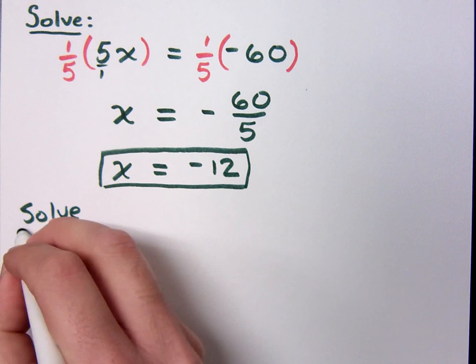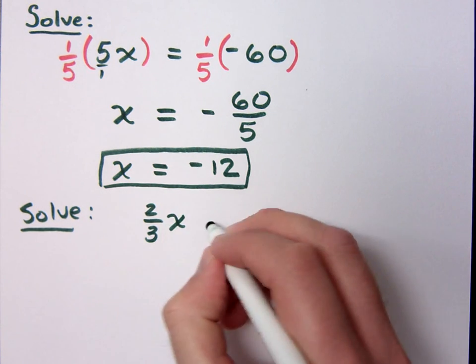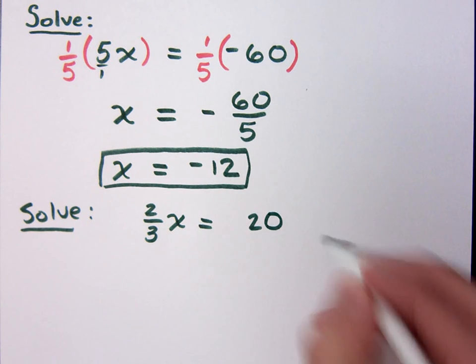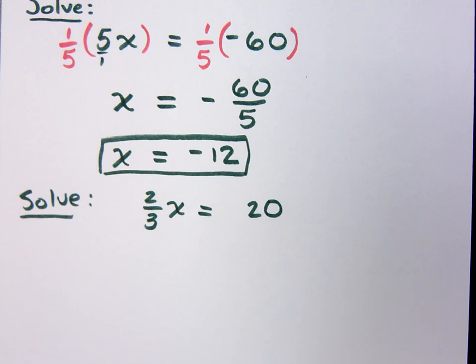Because now I can ask you to solve this. Solve two thirds x equals 20. I have a coefficient of x that's two thirds, but I don't want the two thirds there. And sometimes fractions can make you freak out, but you don't need to. In the last problem I multiplied times the reciprocal. So what's the reciprocal here? 3 over 2.